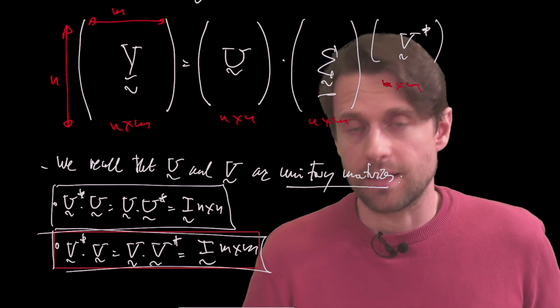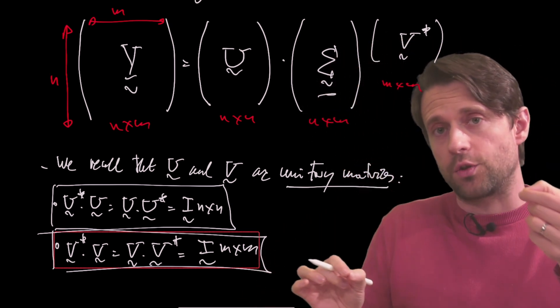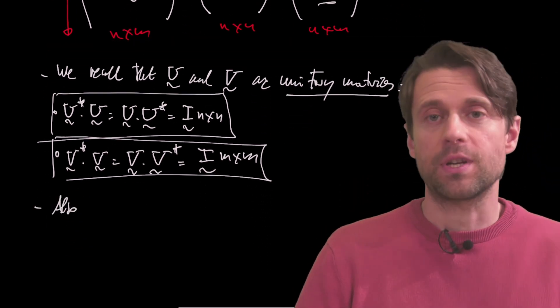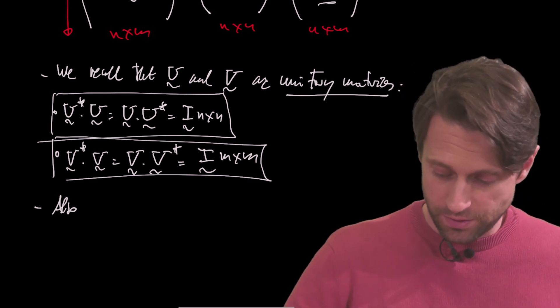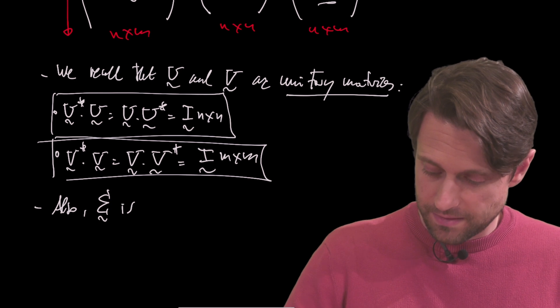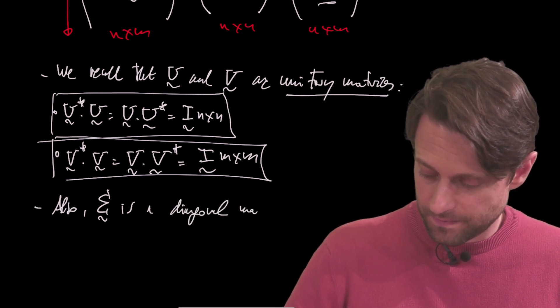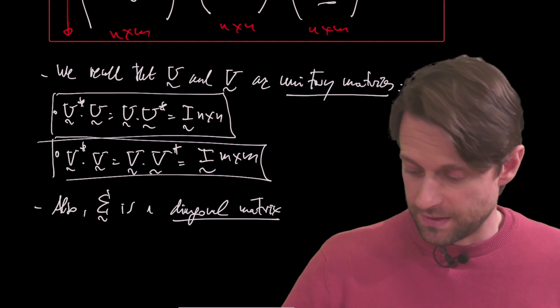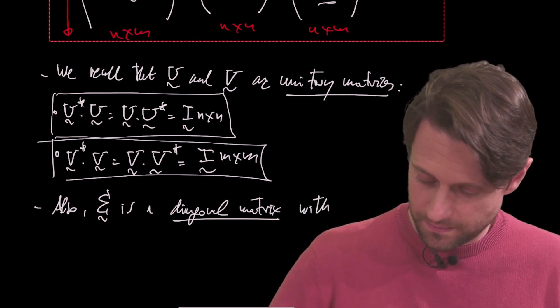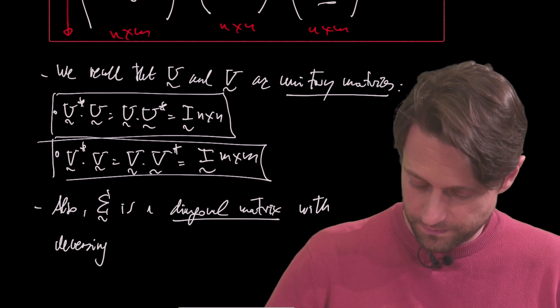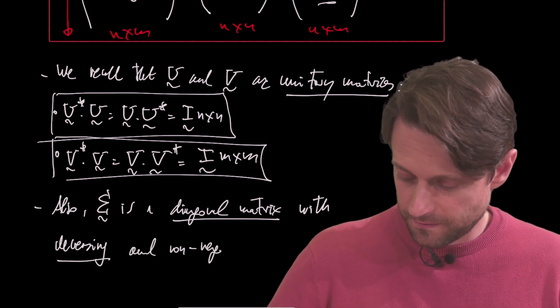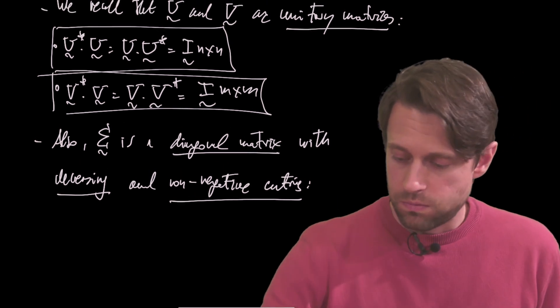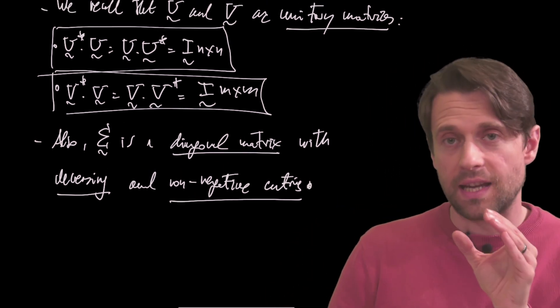Remember also that Σ, the matrix containing the singular values, in the diagonal contains those singular values which are sorted by decreasing order. This is also very important. So also, and this is a little recap on SVD, so you remember the basic important information, also Σ is a diagonal matrix with decreasing and non-negative entries. Non-negative, those are the singular values.